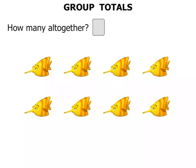So we have two rows, and there are four in each row. So we say that we have two rows of four. Now how many is that?